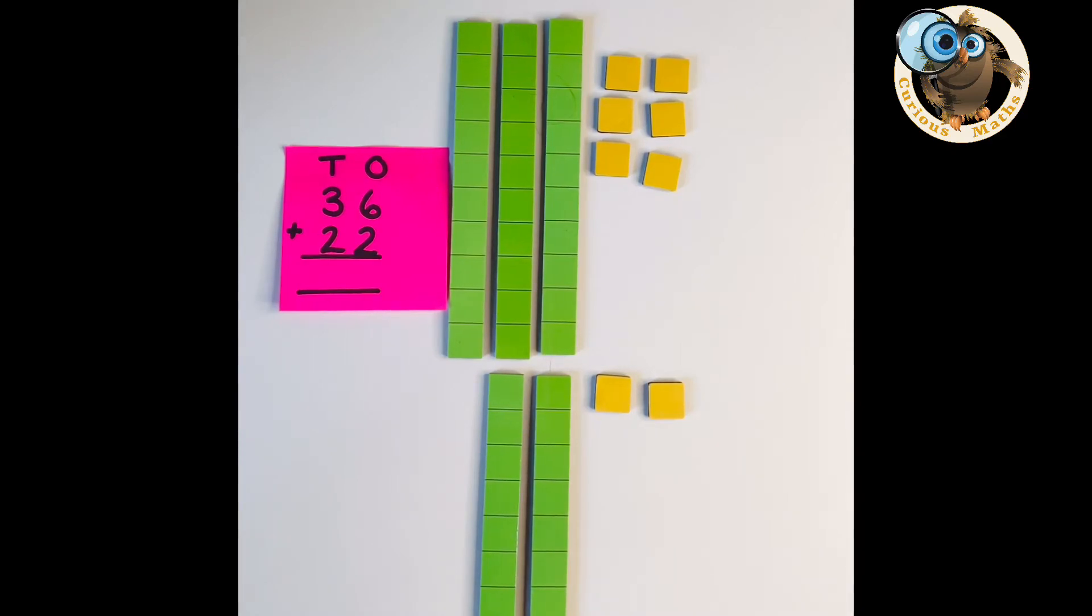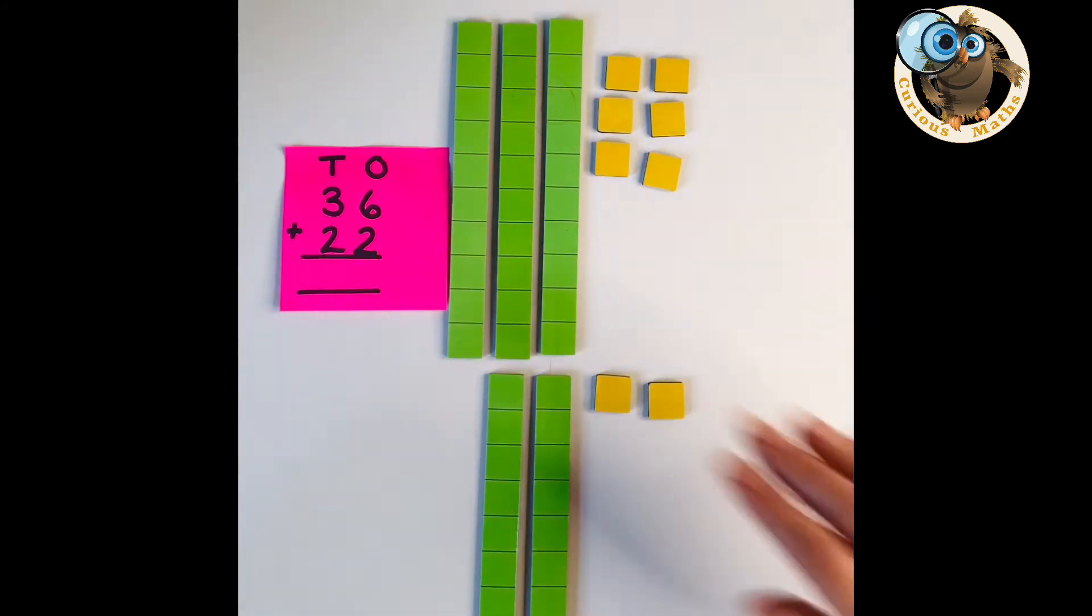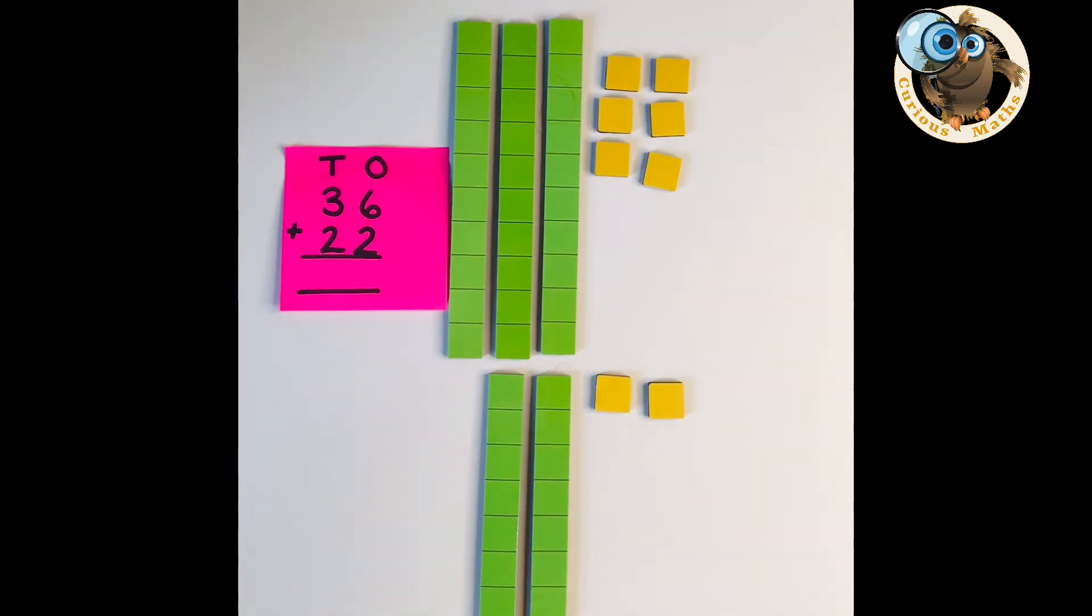Now it's really important to let them build because actually it gives them a chance to unpick the structure of addition but also it tells you a lot as a teacher or a parent at home about what they can do. So for example can they read the number 36 and simply represent it but can they also partition it into tens and ones. So these are magnetic Base 10s so they're quite big but actually the ones you tend to buy in school or have at home would be a little bit smaller but you do need to bear in mind how much space you've got.